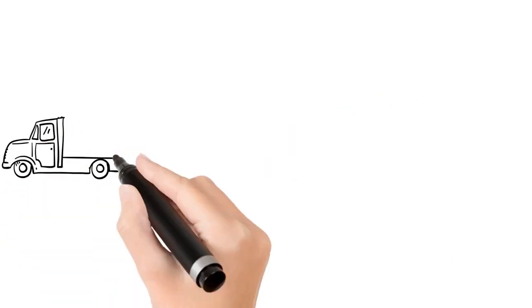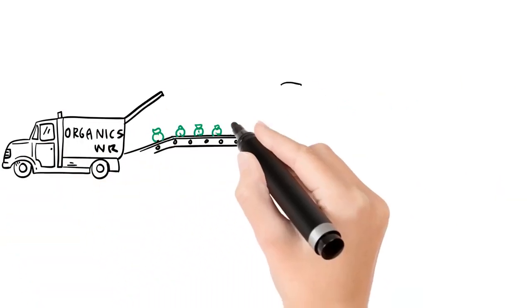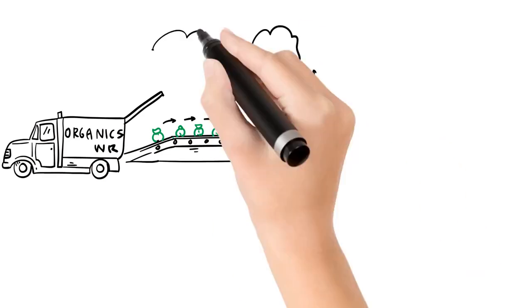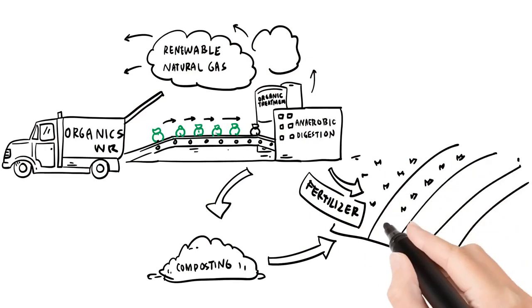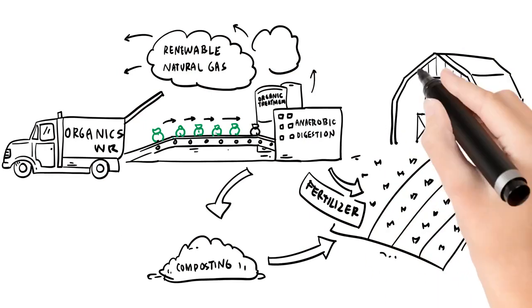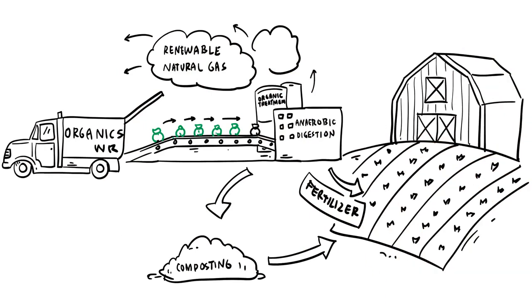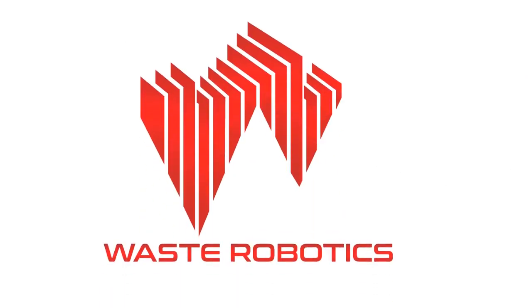This way, clean organics are diverted from landfills and can go towards composting or anaerobic digestion. Waste sent to landfill will be reduced by up to 50% and will generate a lot less nuisance, saving money and the environment. Waste Robotics. Profits through technologies.